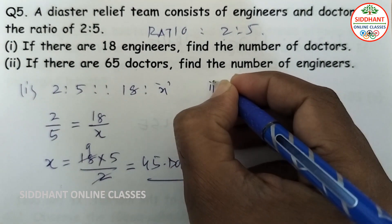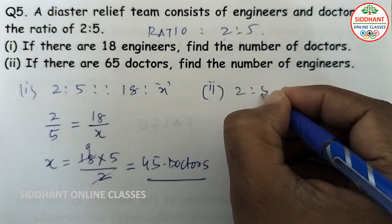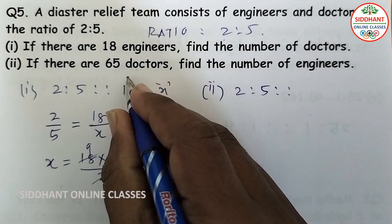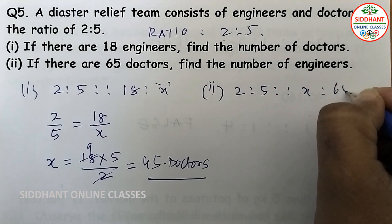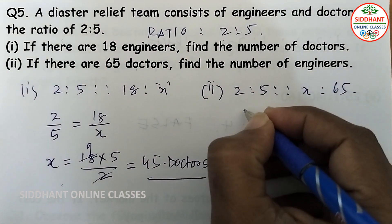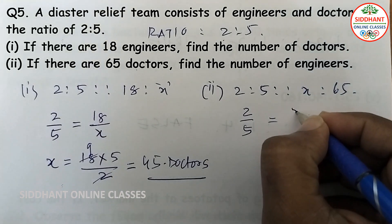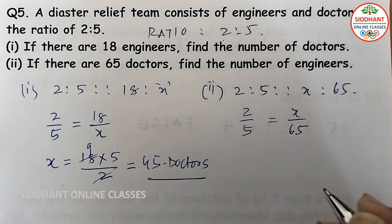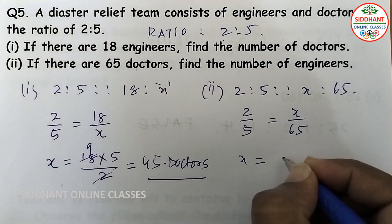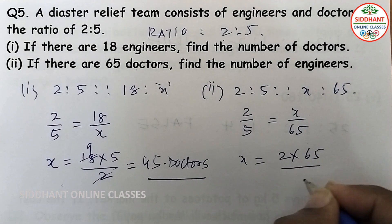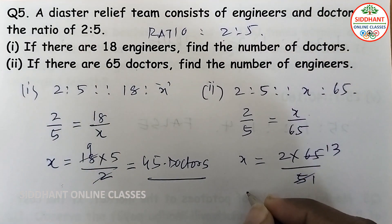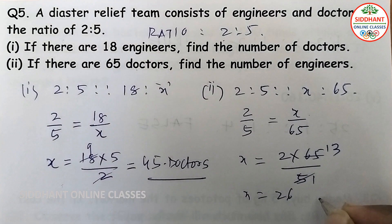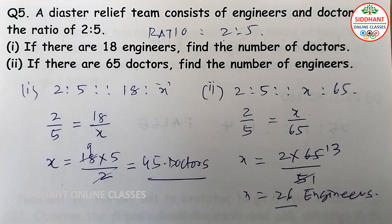Part two: if there are 65 doctors, find the number of engineers. Let engineers be x. Setting up: 2 by 5 equals x by 65, so x equals 2 into 65 divided by 5, which gives 2 into 13 equals 26. There are 26 engineers.